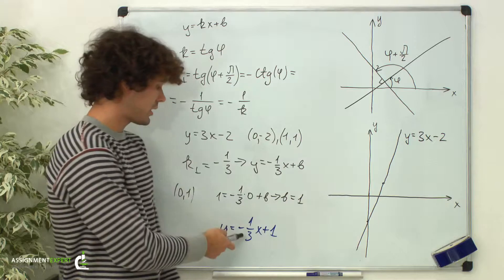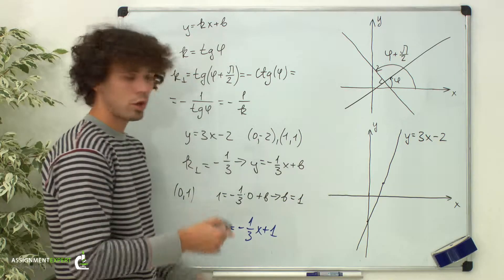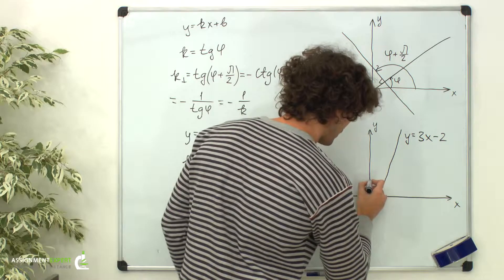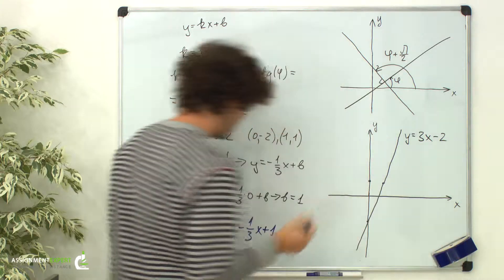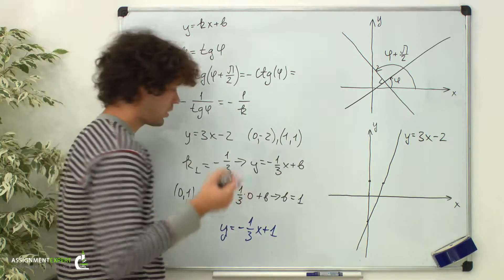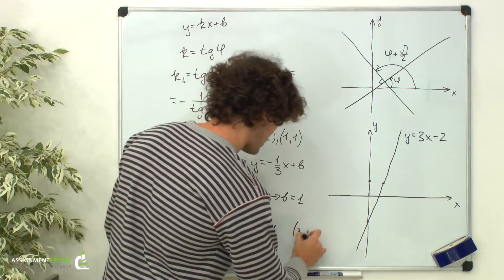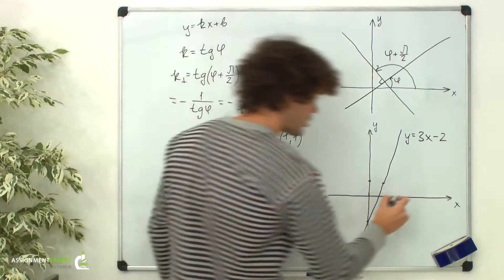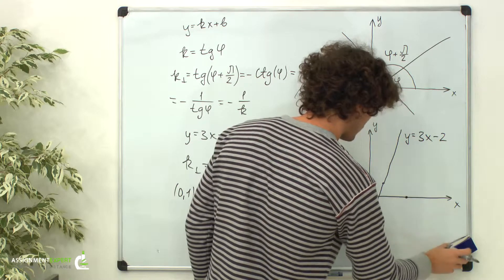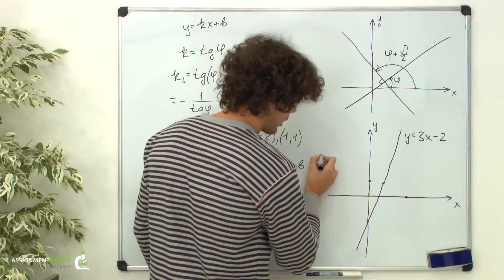Let's also build this line. We already have a point 0 comma 1 over here, and we need to have another point. Let's pick x equals 3, then y equals 0. This point is over here. And here is our line.